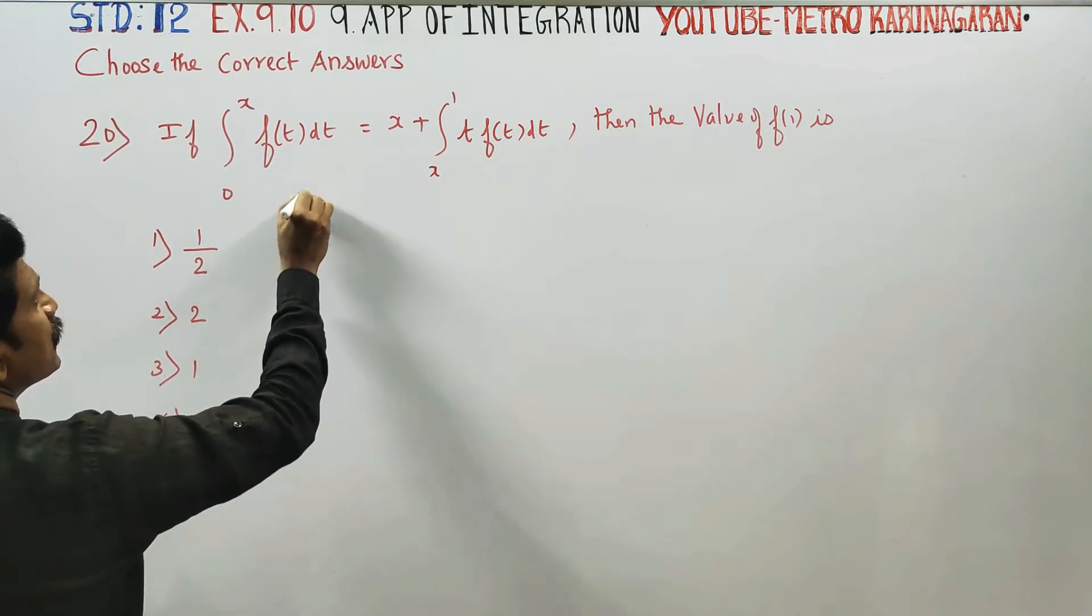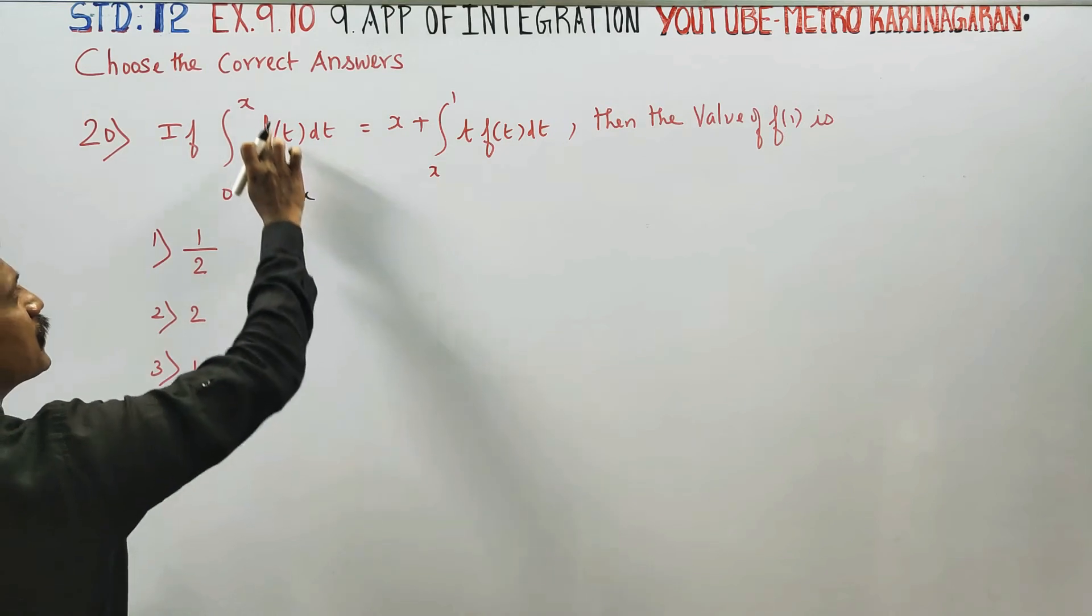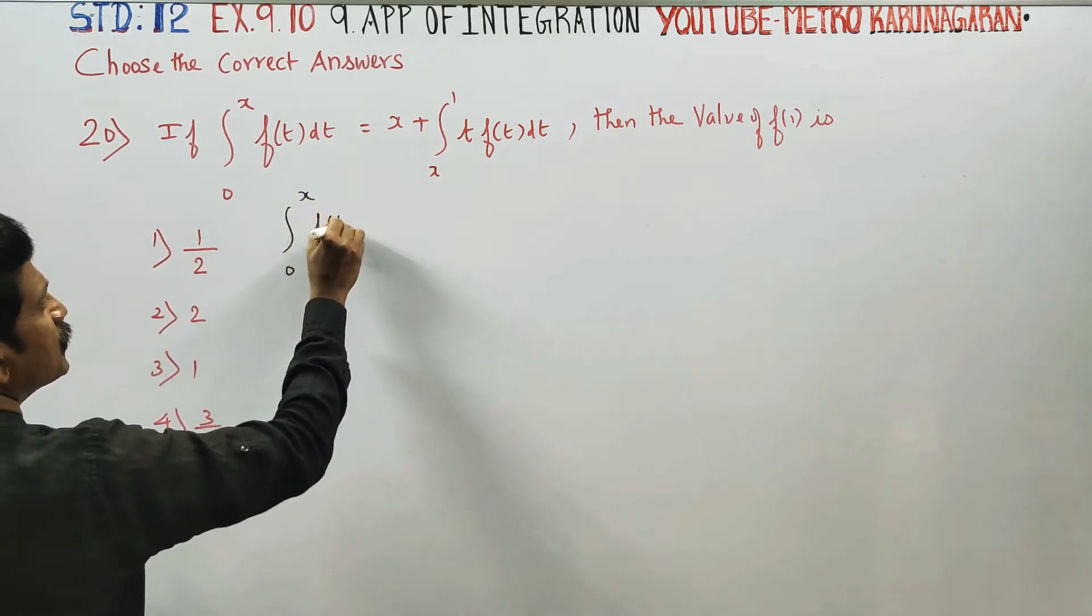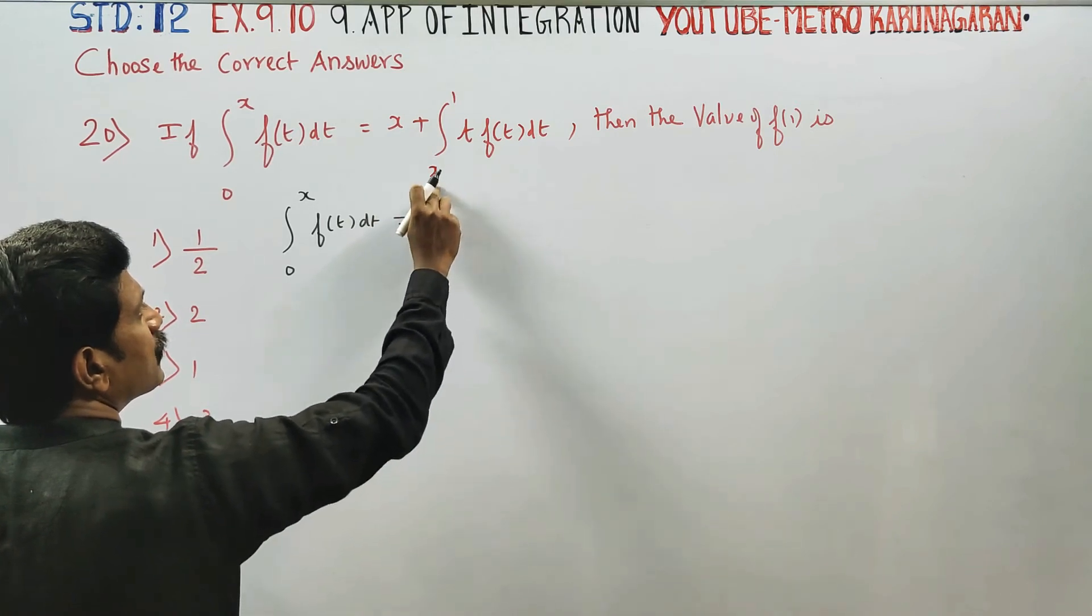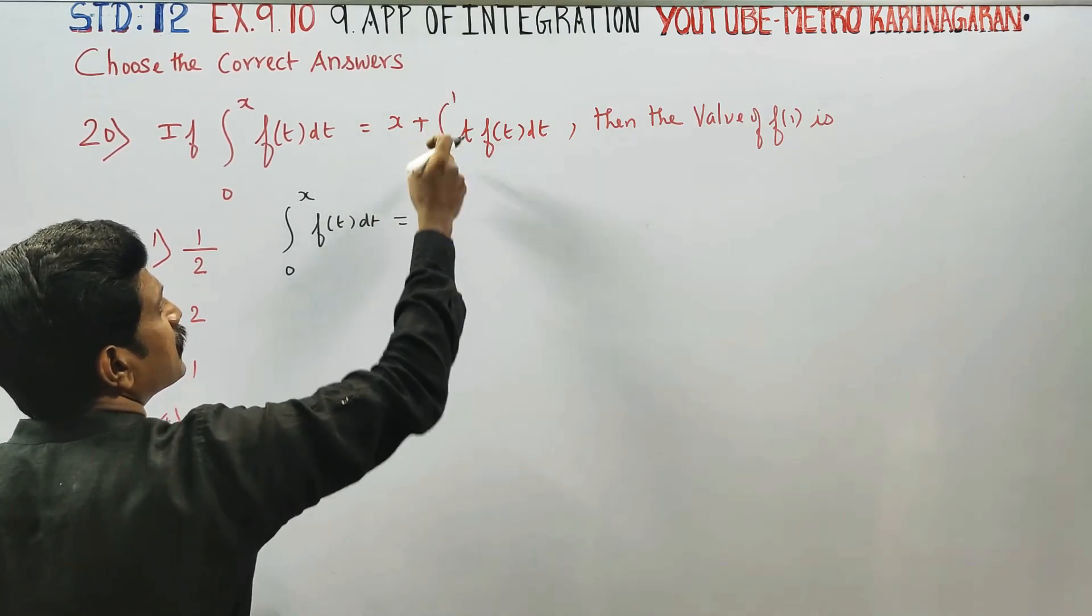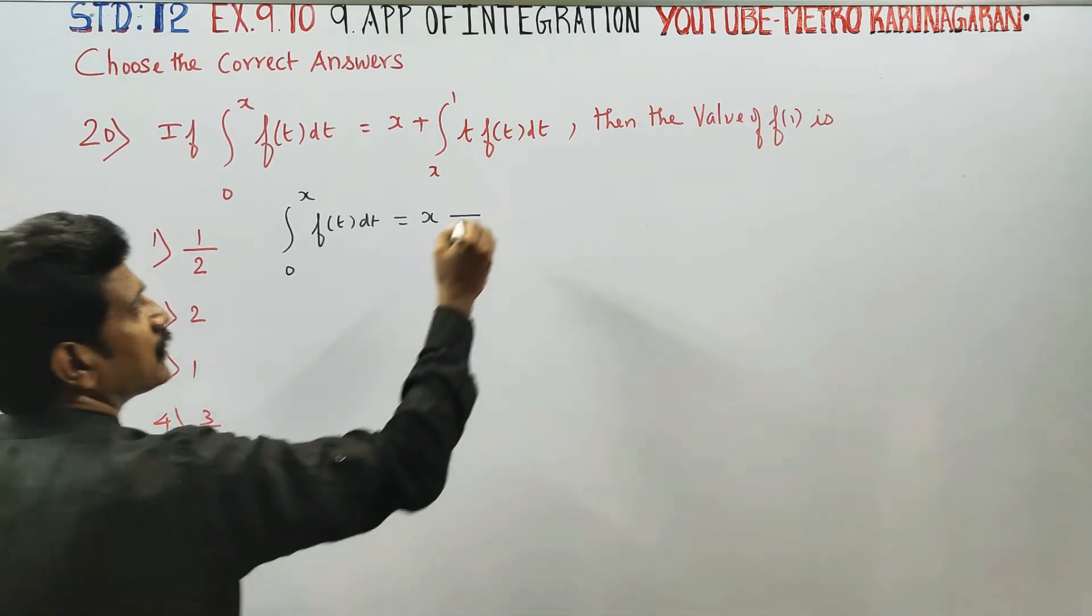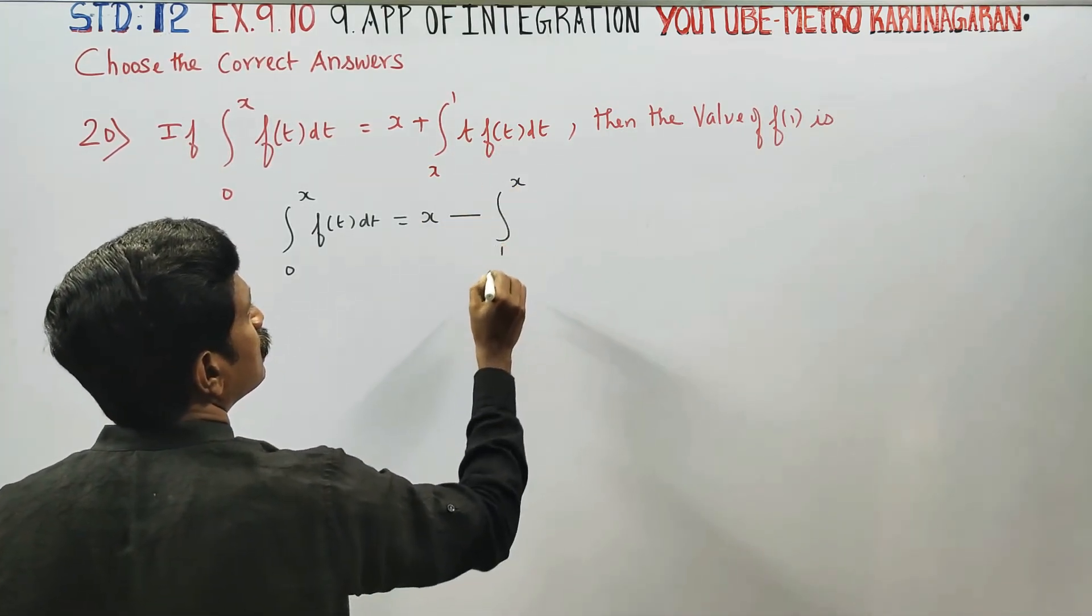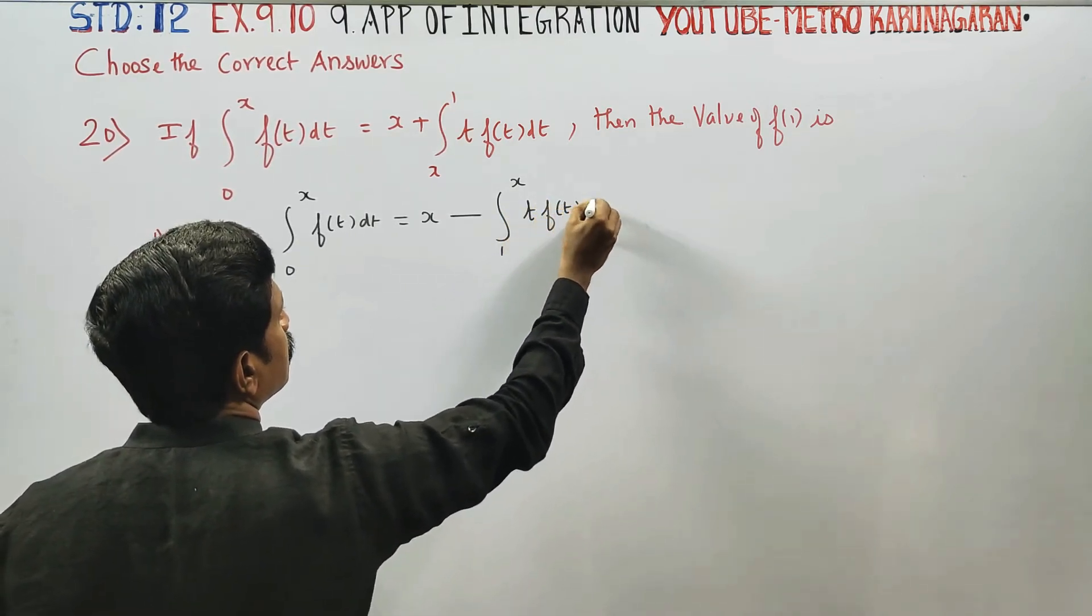Stage 1: integral from 0 to x, the variable. You have to find the value of the integral of f(t) dt equals x plus... the variable is down. You have to find the value of upper limit, lower limit. Variable equals x, integral of t f(t) dt.